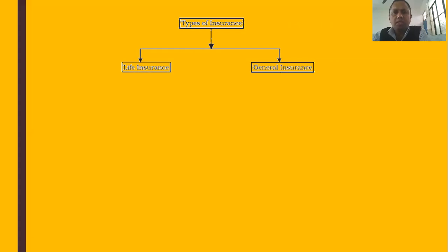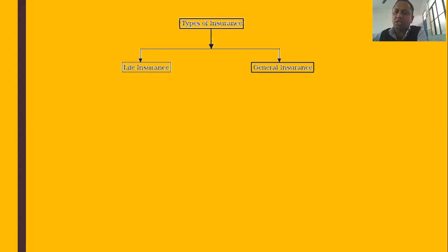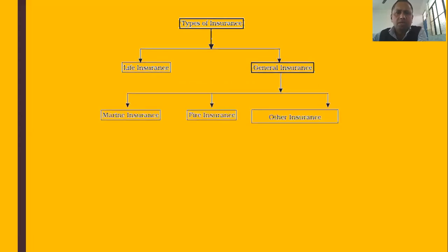Many types of insurance are included under general insurance, such as fire insurance, marine insurance, car insurance, and freight insurance, among several others. Let us start with the first — life insurance.